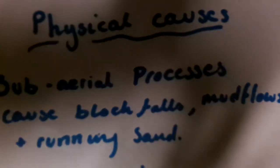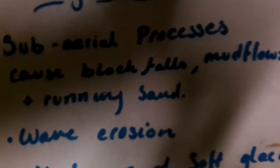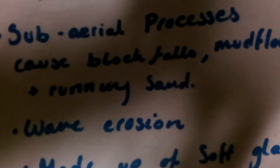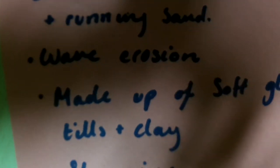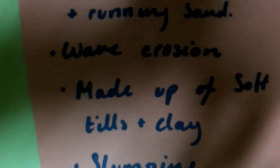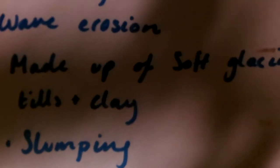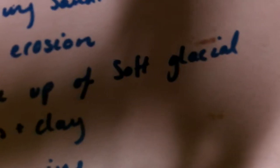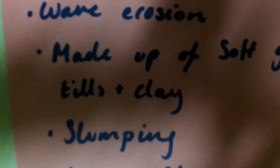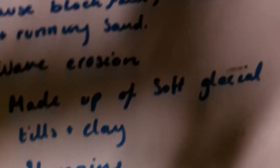The physical causes of coastal erosion are subaerial processes which cause block flows, mud flows and running sand. There's lots of wave erosion so wave cut notches are formed, rotational slumping and slippage. The coast is made up of glacial tills and clay so no hard rock can offer resistance.